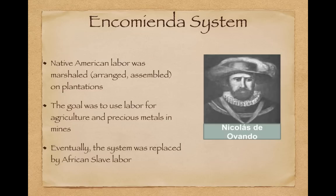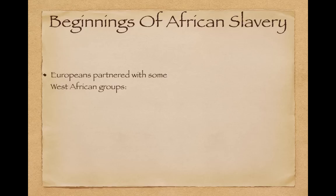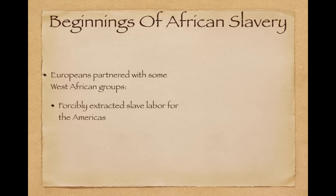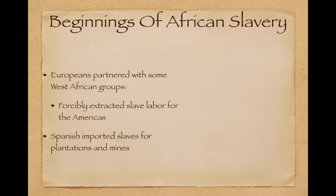Eventually, after the new laws were passed in the early 1500s, which forbid Native American labor on encomienda systems, the encomienda system was replaced by African slave labor. Europeans partnered with West African groups to obtain African slaves and would forcibly extract slave labor for the Americas. Millions of Africans were kidnapped and forced into slavery, and the Spanish imported slaves to work on plantations and in mines, specifically looking for gold and silver and growing things like sugar.